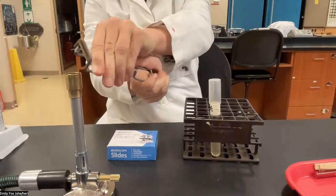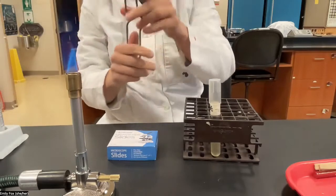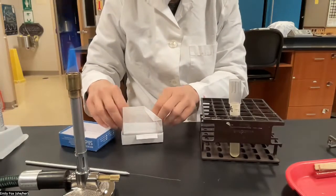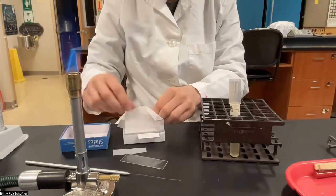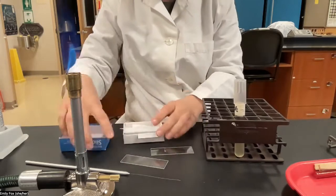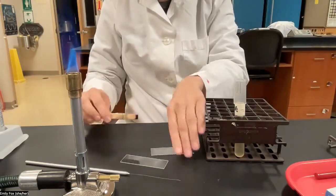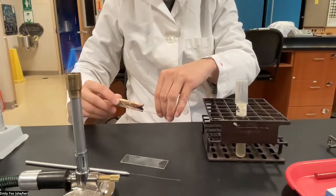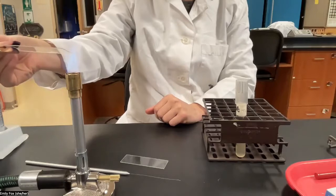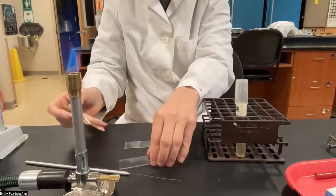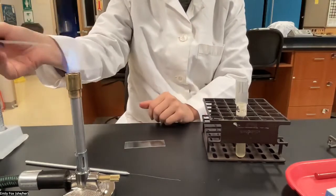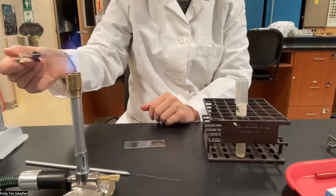Light the Bunsen burner. We're going to make two slides of bacteria for Gram staining. The first thing we're going to do is just degrease the slides. Make sure that they don't have any oils on them, will help our wax crayon stick a little bit better. Just pass it through the flame on each side to degrease.